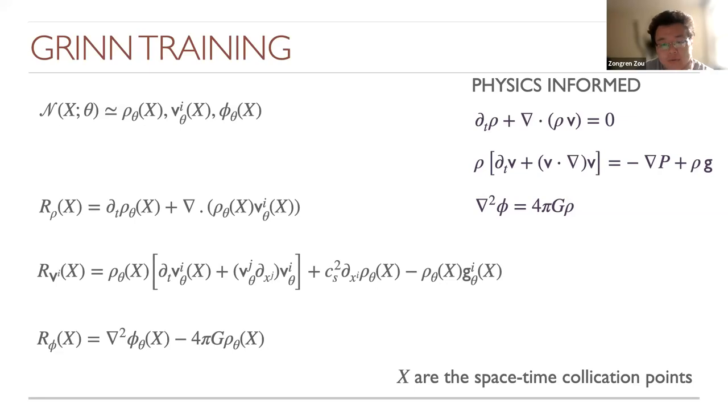With no further questions, the session closed and moved to the next talk. The second speaker is Zhiwei Gao, currently pursuing his master's degree at Southeast University, China, with research interests including Bayesian inverse problems, dimension learning, and communication.